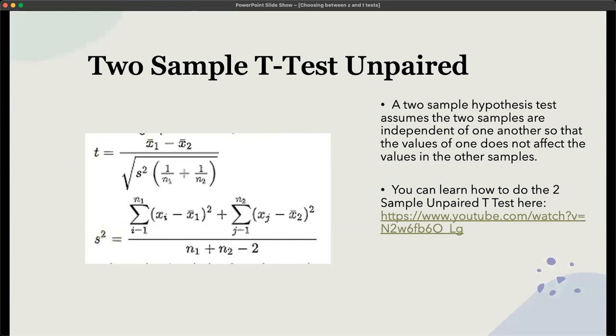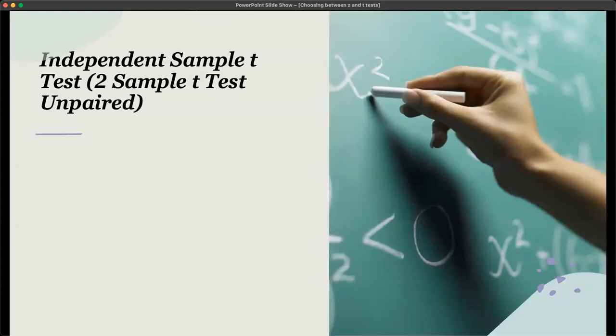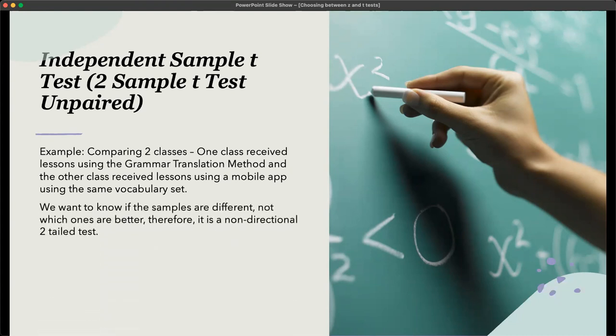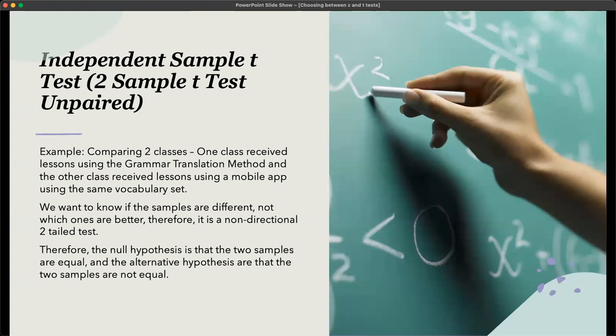This is the formula here. So for an independent samples t-test or two sample t-test unpaired, this again is comparing two classes. One class received a lesson using grammar translation method and the other class received a lesson using a mobile app on the same vocabulary set. So we want to know if the samples are different, not which ones are better. Therefore, it is a non-directional two-tailed test. And the null hypothesis is that the two samples are equal. And the alternative hypothesis is that the two samples are not equal.